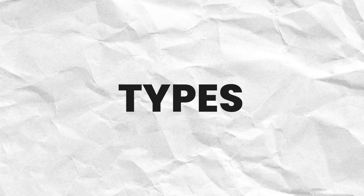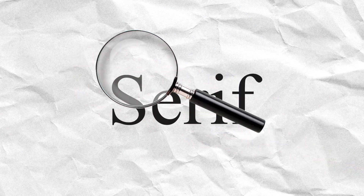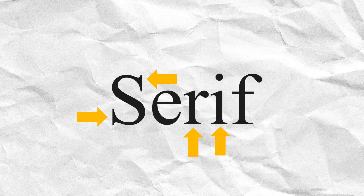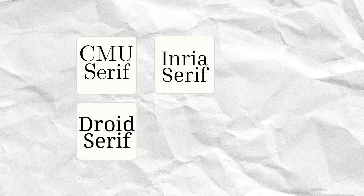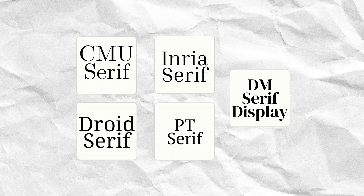When it comes to choosing a font for a design, there are many types to consider. The first one is Serif. To identify Serif fonts, pay attention to the decorative strokes at the end of every letter. These strokes are called Serifs and they give Serif fonts a more traditional and elegant look. Some examples include CMU Serif, Droid Serif, PT Serif, and DM Serif Display. On Canva, there are many Serif fonts to choose from.